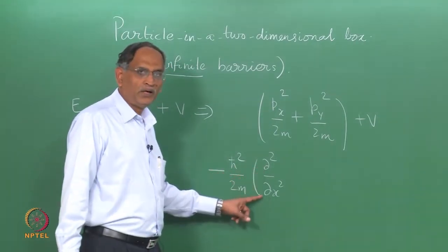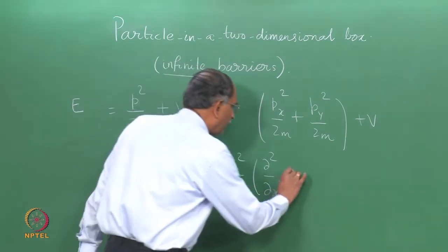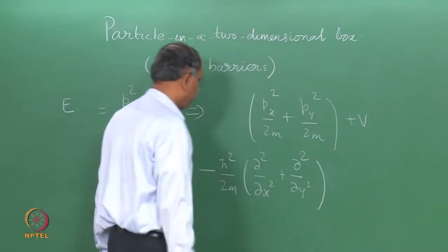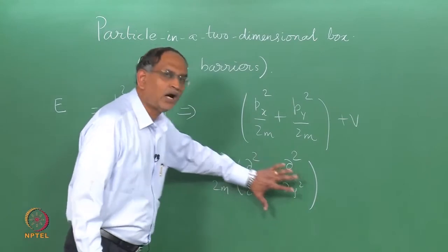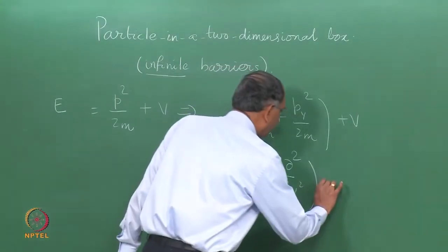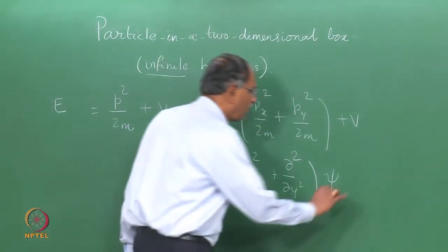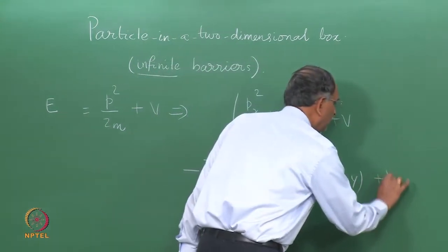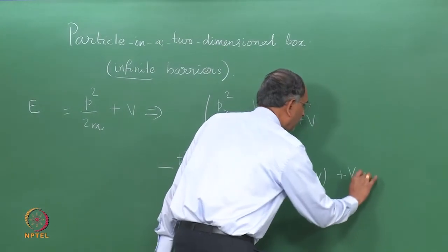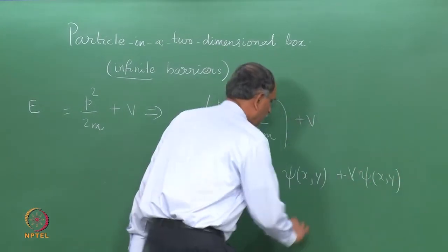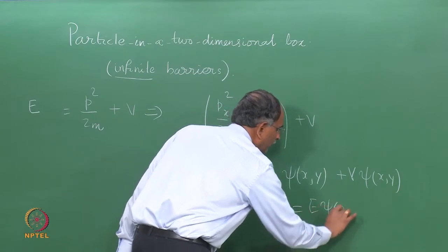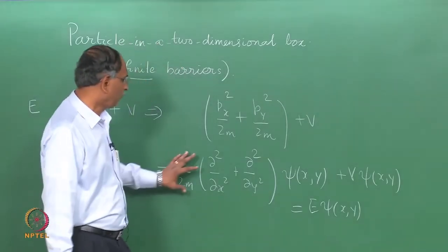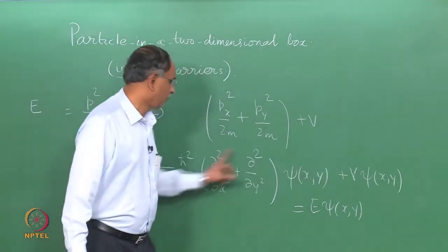So you have −ℏ² ∂²/∂x² / 2m and correspondingly for py² you have ∂²/∂y². This is the kinetic energy operator part of the Hamiltonian, and the wave function is a function of x and y. Adding the potential term V, psi(x,y) = E·psi(x,y). This is the two-dimensional Schrödinger equation.